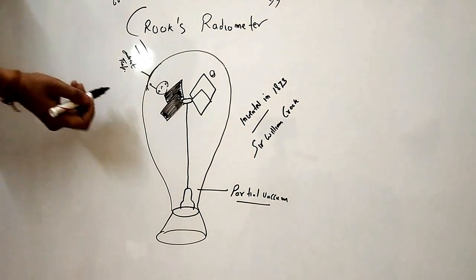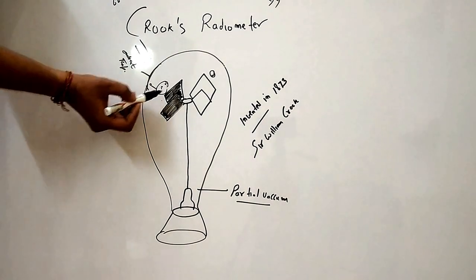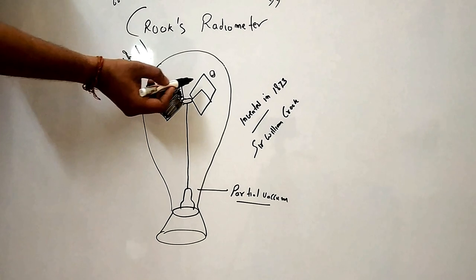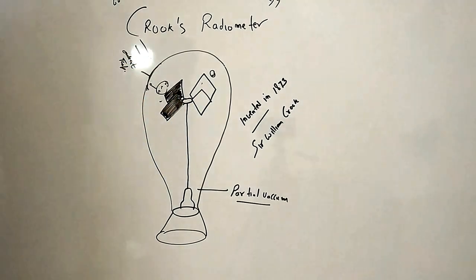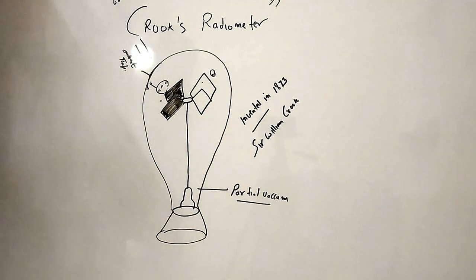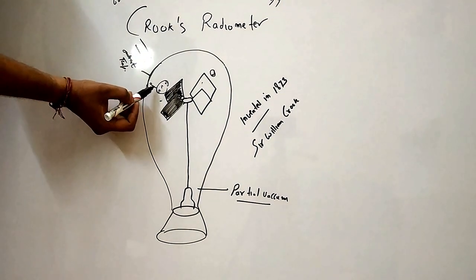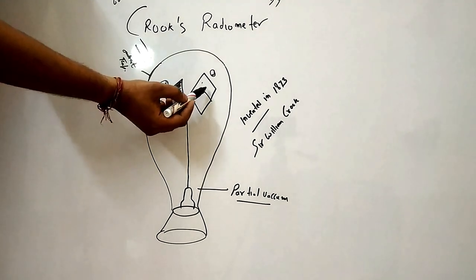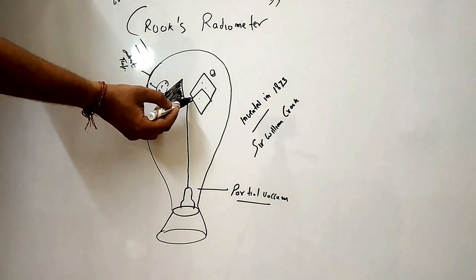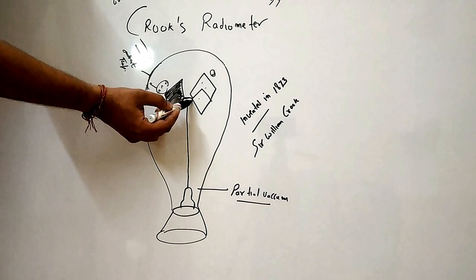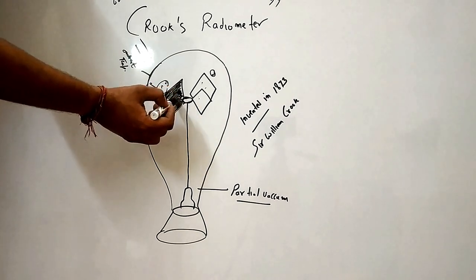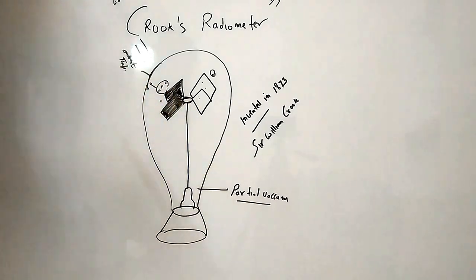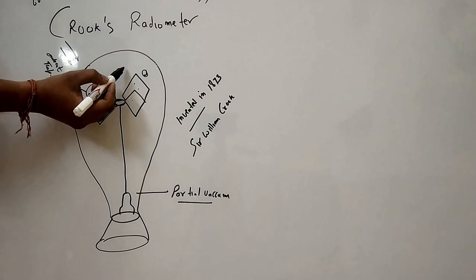The black side absorption is higher than the white side. This creates a temperature ratio. When we analyze the heat of the black side, we add thermal energy. The temperature layer transfers thermal energy, creating mechanical motion.